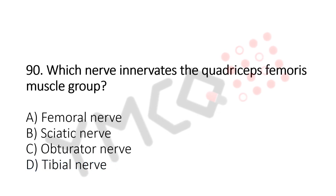Which nerve innervates the quadriceps femoris muscle group? Option A: femoral nerve. Option B: sciatic nerve. Option C: obturator nerve. Option D: tibial nerve. And the answer is option A, femoral nerve. Now let us move to question number 91.